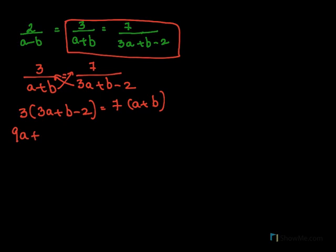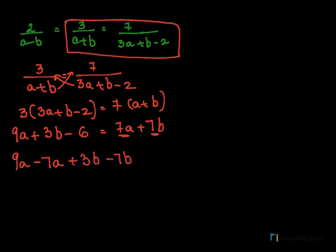So 3 times 3A plus B minus 2 equal to 7 times A plus B. Open the bracket. So I get 9A plus 3B minus 6 equal to 7A plus 7B. Bring all the A terms together. This is the A term, I get it here, 7A. I write 3B here. This is another B term which I will get on this side. And this is minus 6 equals to 0.